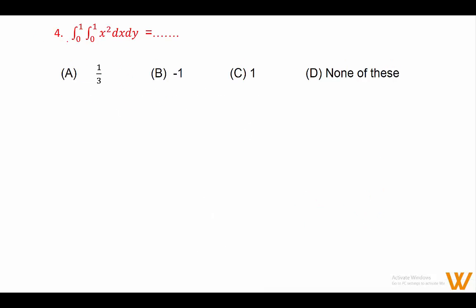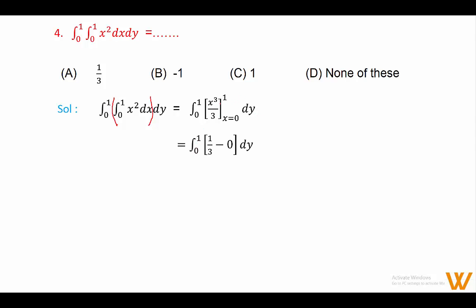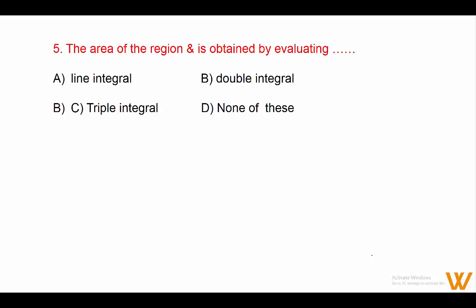Fourth MCQ: integration from 0 to 1, integration from 0 to 1 of x² dx dy. Solution: evaluate inner integral with respect to x — integration of x² is x³/3, evaluated from 0 to 1, giving 1/3. Then 1/3 is constant, so 1/3 × integration of dy from 0 to 1 = 1/3 × (1 − 0) = 1/3. Answer is option A: 1/3.